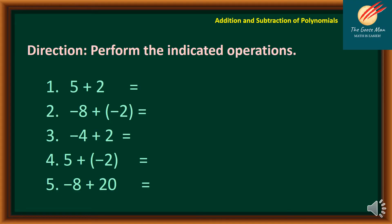Before we head on to addition and subtraction of polynomials, let us recall first addition of integers. For instance, number 1: 5 plus 2, so we have 7. Number 2: negative 8 plus negative 2 — we have two negatives, meaning we add them together and copy the sign, so the answer is negative 10. Number 3: negative 4 plus 2 — we subtract the numbers and copy the sign of the greater absolute value, so we have negative 2.